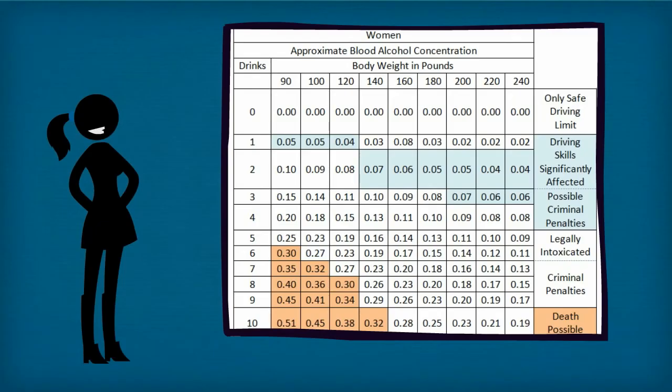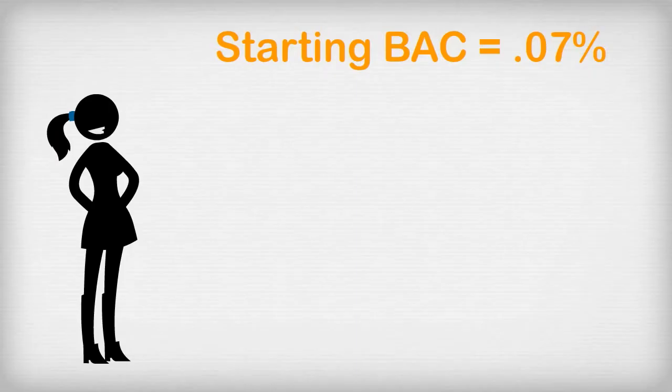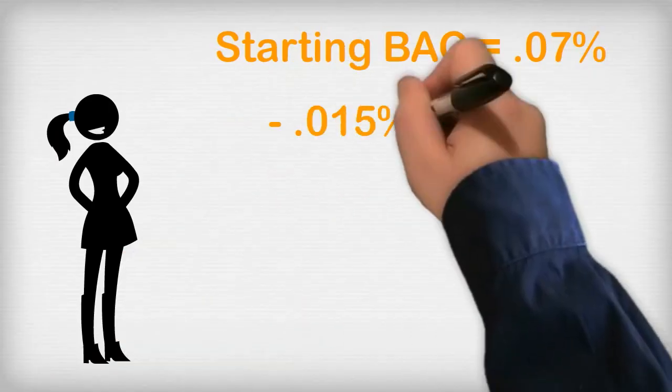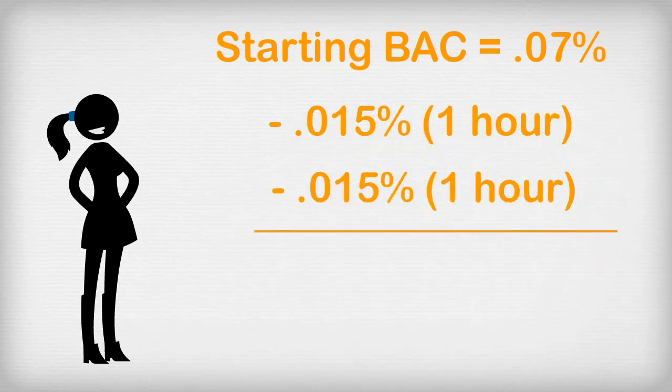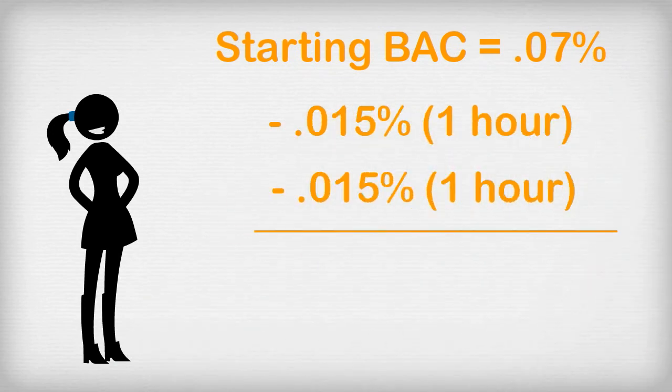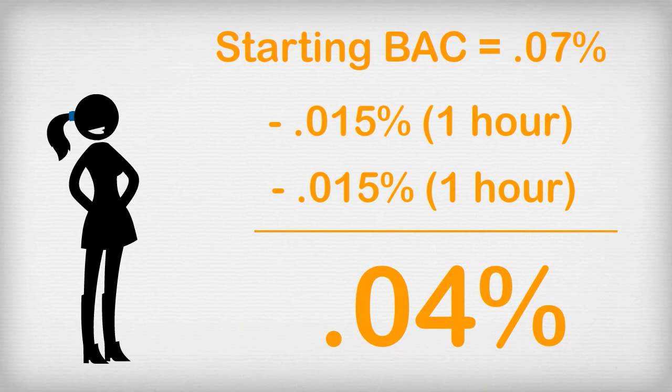Now Jill plans to have a margarita, which actually counts as 1.5 major drinks, so she would be having two major drinks. Her fit weight is 140 pounds, making her BAC 0.07%. Now subtract 0.015% for each hour after the first hour of drinking, for a final BAC of 0.04% when it's time to leave.